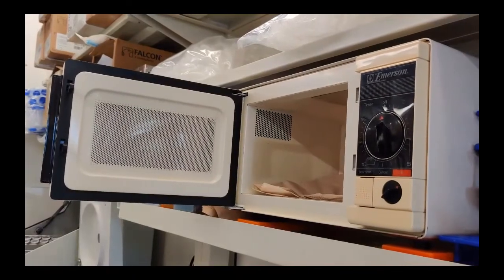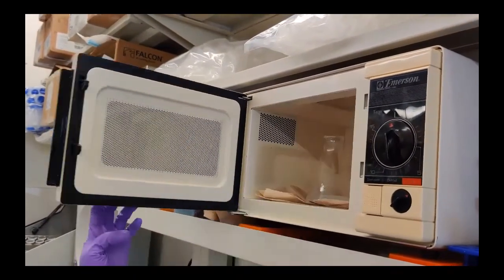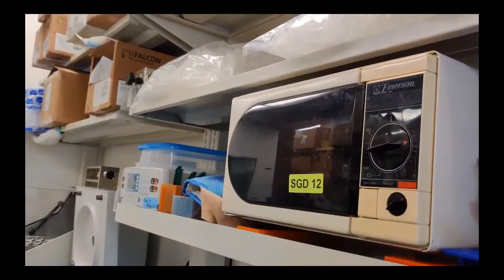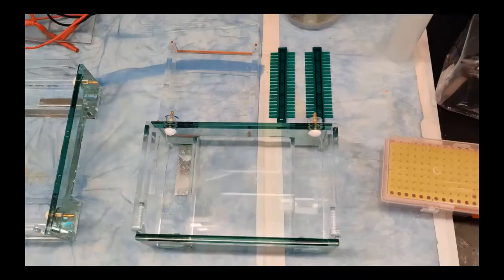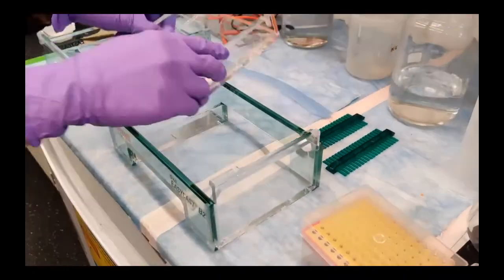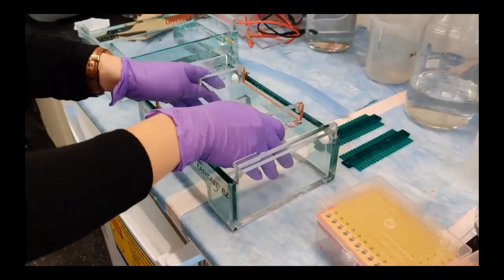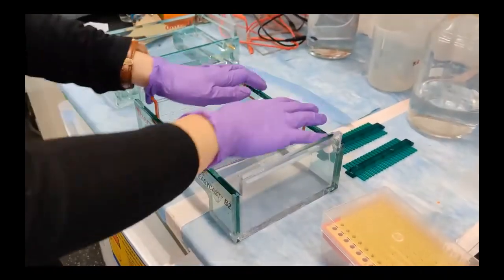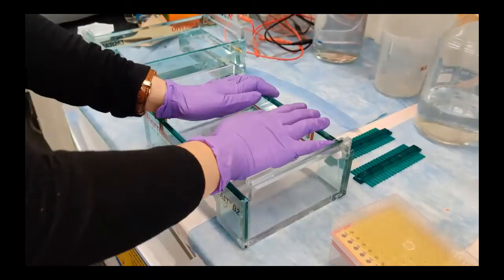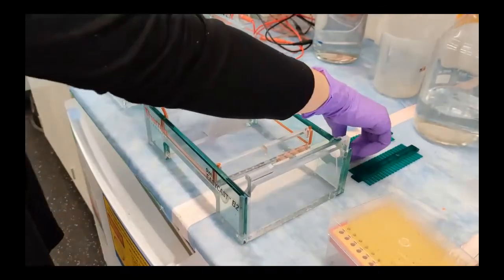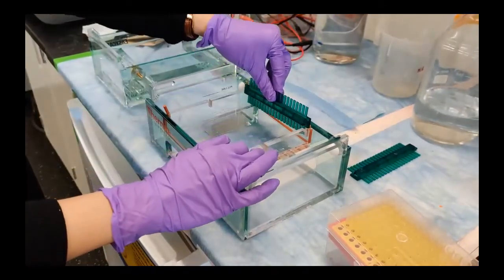To dissolve the powder, we heat it up using a microwave, just like your microwave at home. While the microwave is going, we can set up the tray to mold the gel, similar to making jello at home. The green pieces here are combs to help us shape the wells for us to put our sample into.